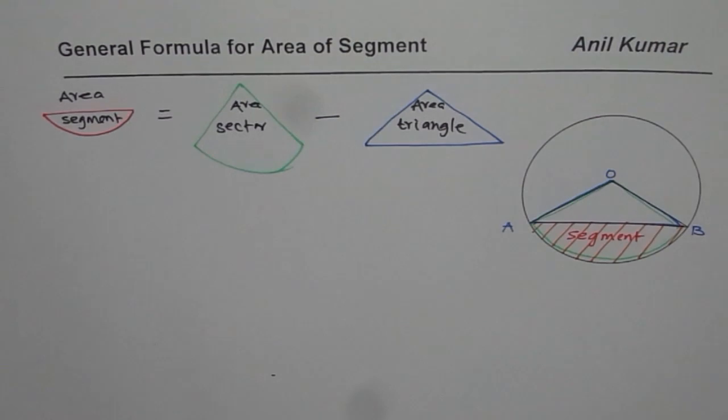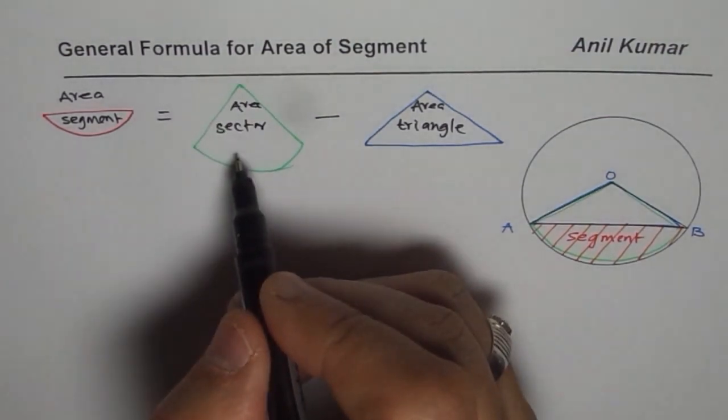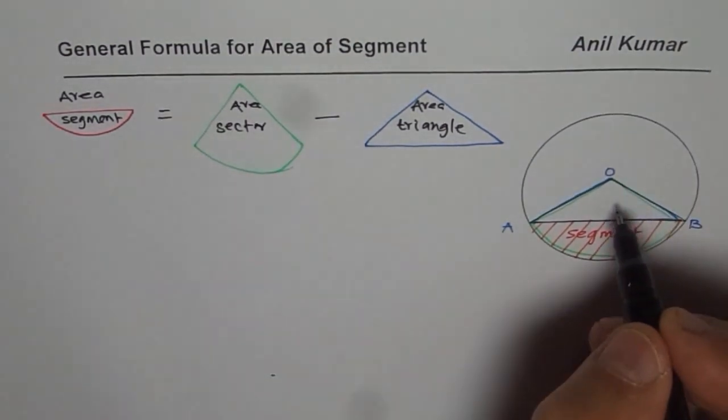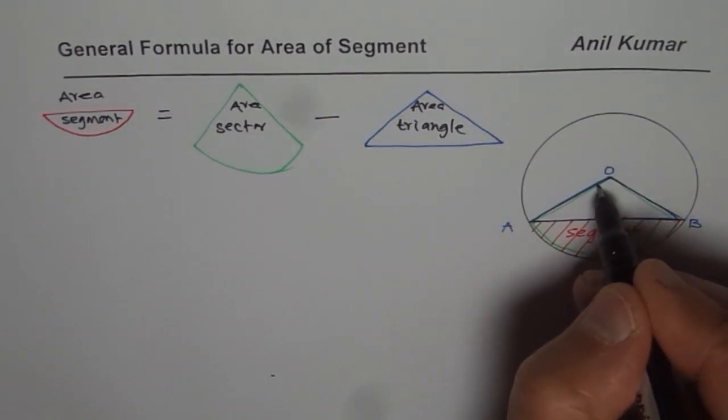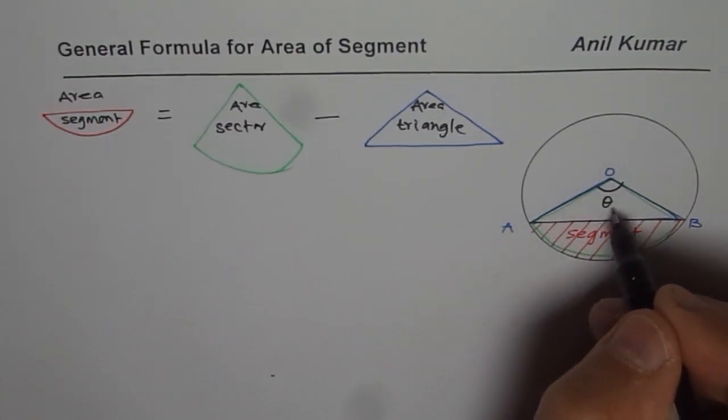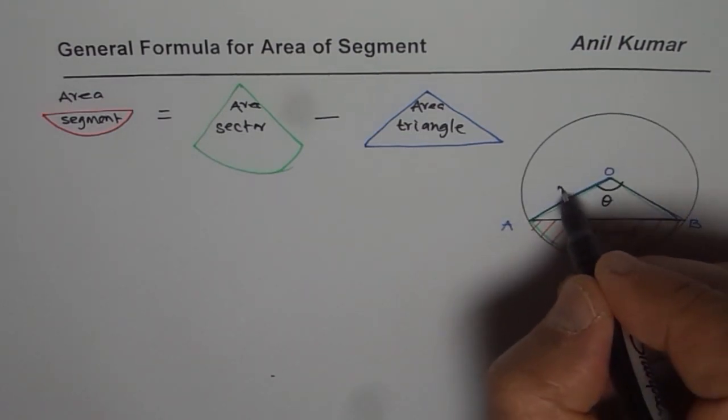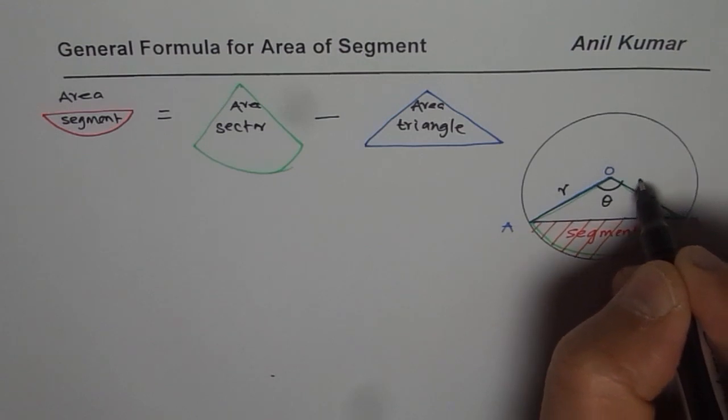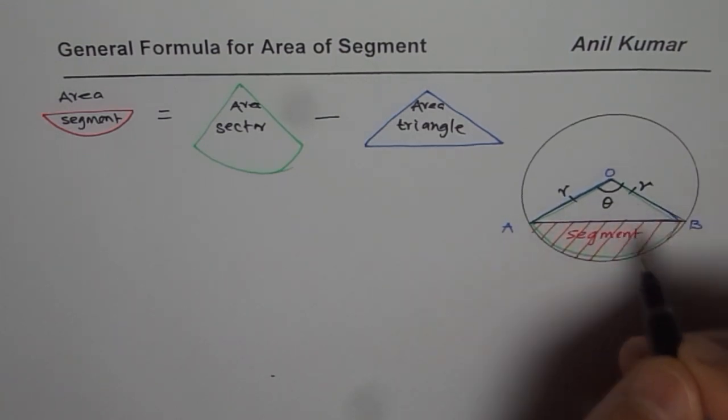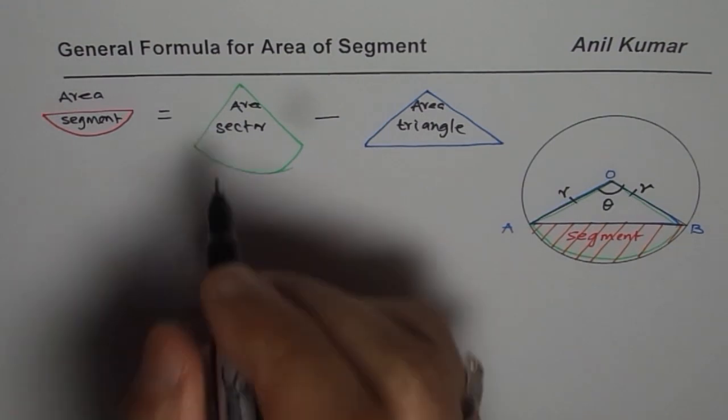Now to find the area of the sector, it is the ratio of total area to the angle enclosed. So let us say this angle is theta. It is termed in terms of angle. To find the total area, we should know the radius of the circle. So that should be the radius. So first, let us say area of sector.